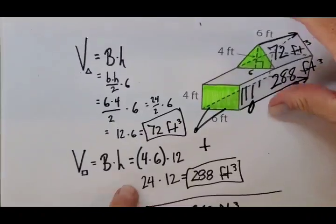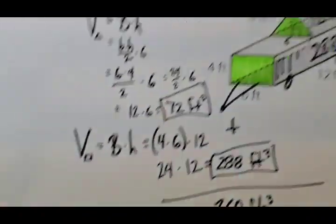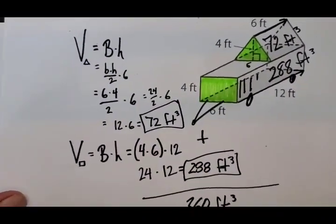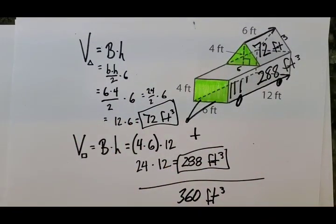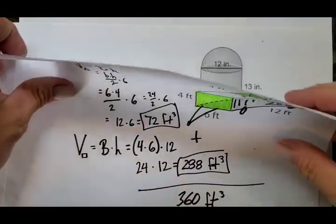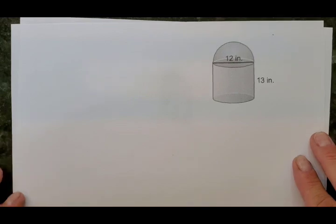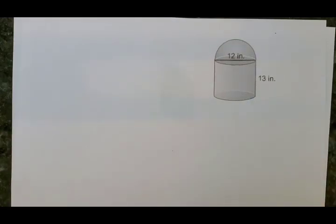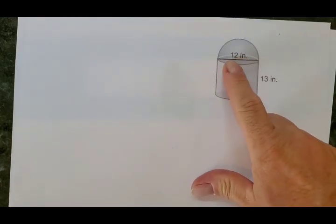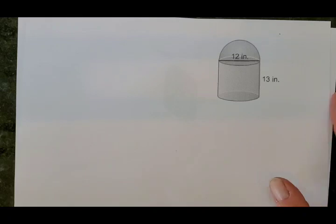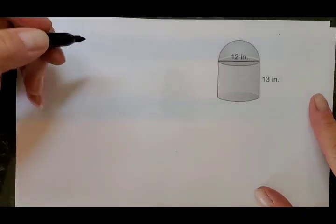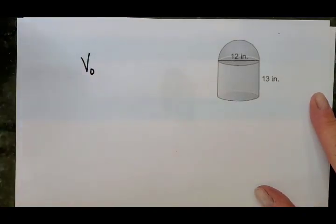We're going to do another one. The method will be very similar. The challenge for you will be to write everything out and stay organized — that's what I've tried to do throughout. Let's take a look at this one. I have no idea what that is, but if we are asked to find its volume, we'd have to find the volume of this half sphere and then also the cylinder attached to it.